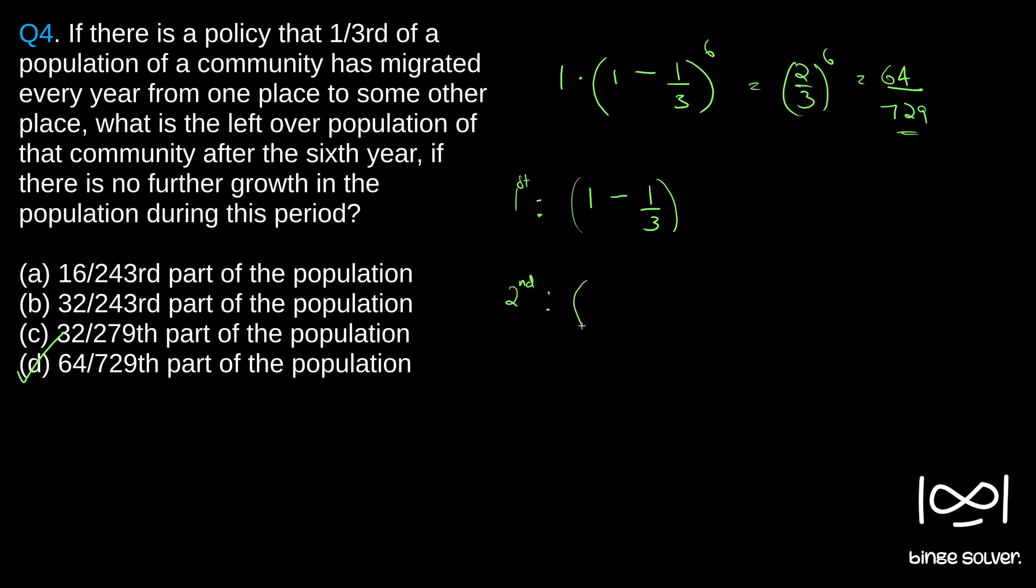1 minus 1 by 3, or 1 minus 1 by 3 into 1/3 - this population further reduced by 1/3. If you take 1 minus 1 by 3 common, what we will get? 1 minus 1 by 3 into 1 minus 1 by 3. So that becomes 1 minus 1 by 3 the whole square.